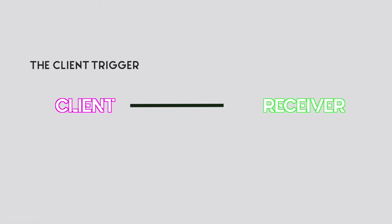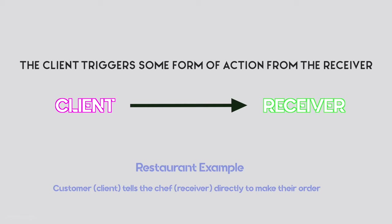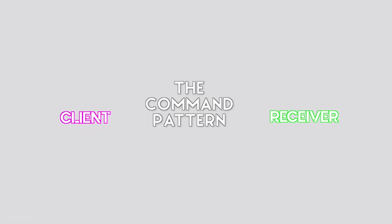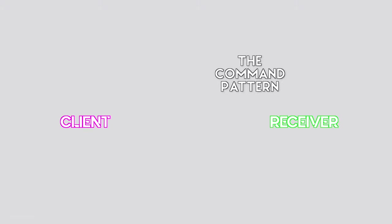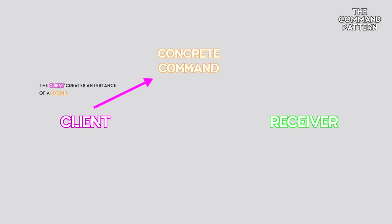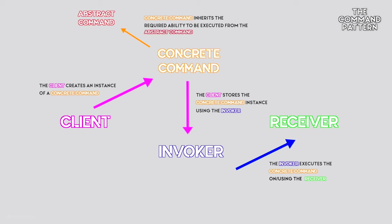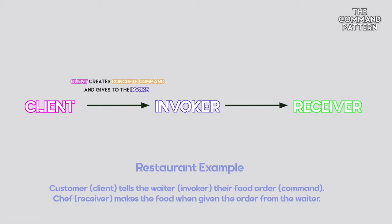Without the command pattern, the client triggers a method of a particular target — the receiver. Typically the logic is actually defined by the receiver, so it is something that the receiver knows how to do — a class and a method of the class. But with the command pattern, we add in a middle layer. Instead of invoking a method, the client will create an instance of a concrete command. The invoker will store the instance, and then later the invoker will execute the command on or using the receiver. The invoker has the guarantee that every command can be executed because all commands inherit the ability to be executed from the abstract class. So to summarize: the client creates a command intended for the receiver, but gives it to the invoker because the invoker can execute the command at a later time.